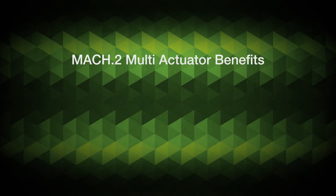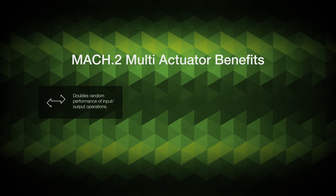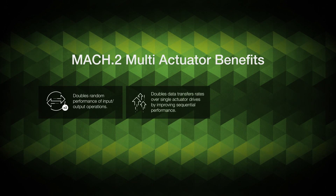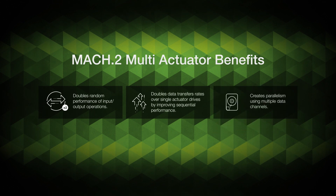Mach 2 technology has three key benefits for users: doubling of the IOPS for random data access, 2x the sequential bandwidth performance for streaming applications, and it is the first hard drive technology to introduce parallelism, enabling two independent streams for dual channel access.